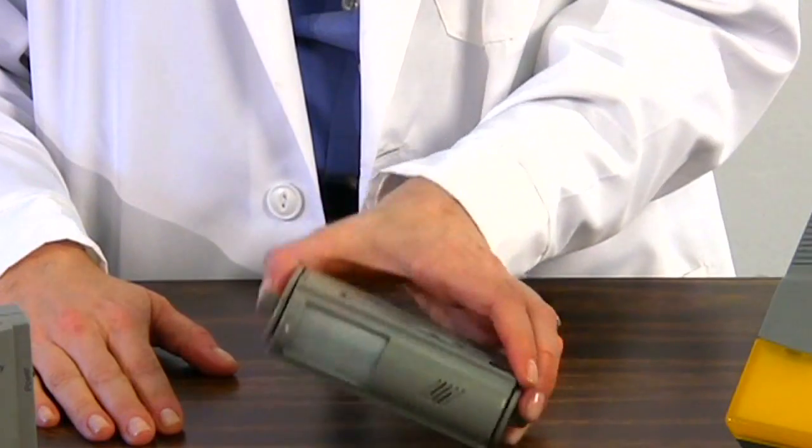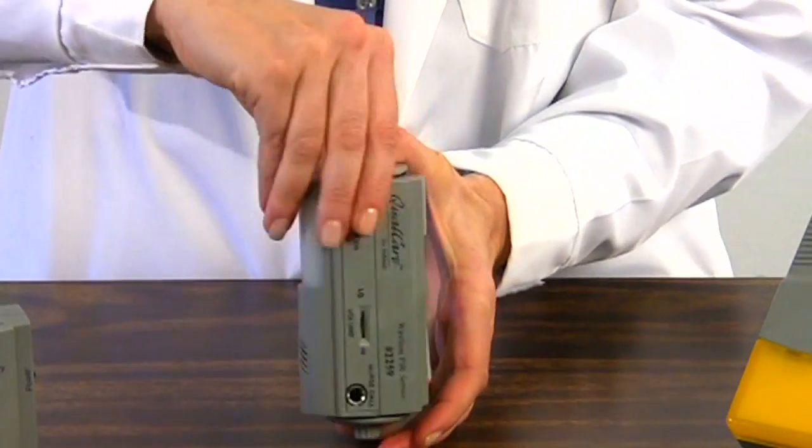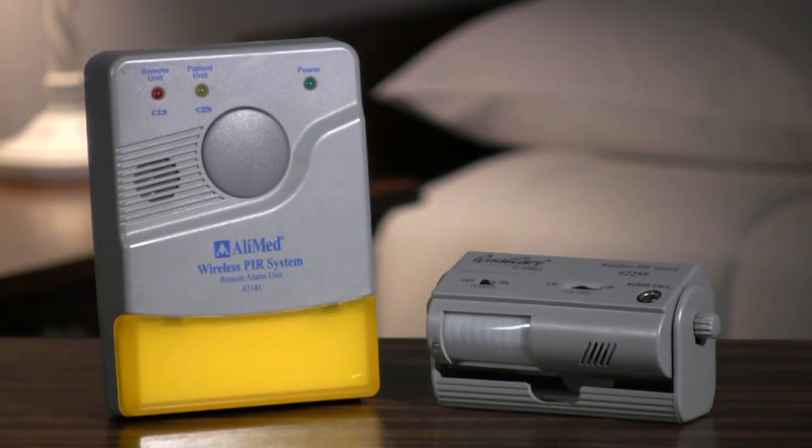Like System 1, System 3 bed alarm with remote receiver comes installed with a swivel mounting bracket and includes one 9 volt battery. It also comes with a wireless remote receiver unit.